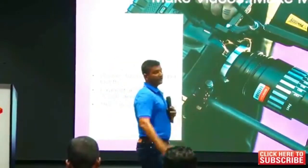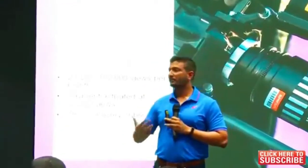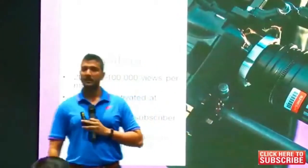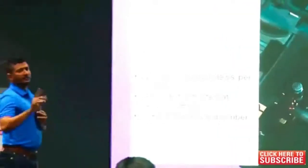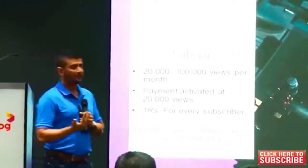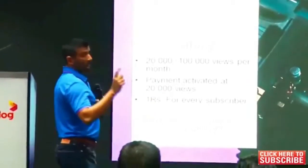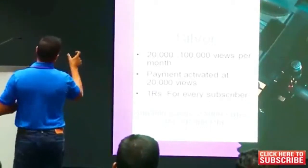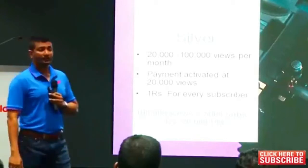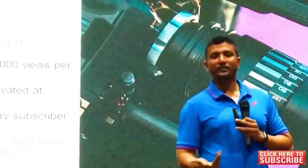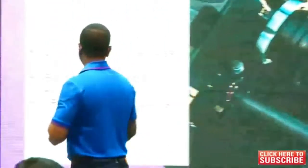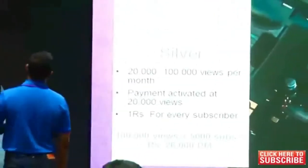You can start off as a silver content creator — this is the Silver platform. When you activate the Silver platform, you can see the videos on your channel. You can see a minimum of 20,000 views, with an average of around 19,600 views, which is below 20,000 views per month.